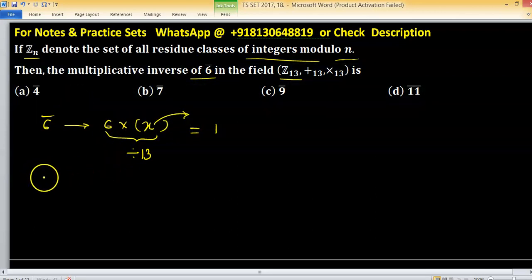So if we put 6 into 4, suggestions from options, we are getting 24. After dividing by 13, we are not getting 1.